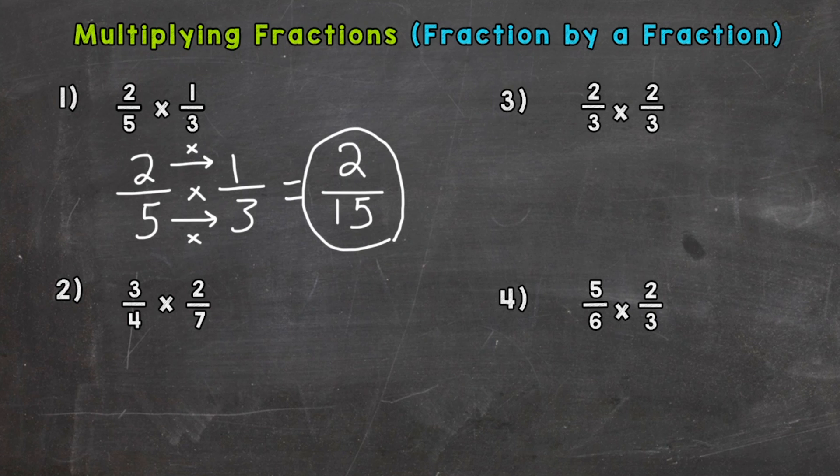Number two: we have three-fourths times two-sevenths. Three times two is six, four times seven is twenty-eight, so we get six twenty-eighths. Now both these numbers have a common factor other than one that we can break down or simplify this fraction.